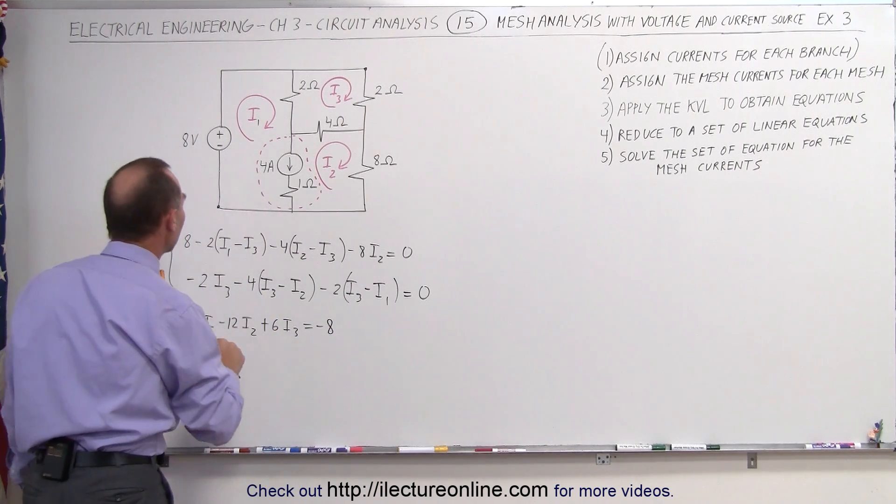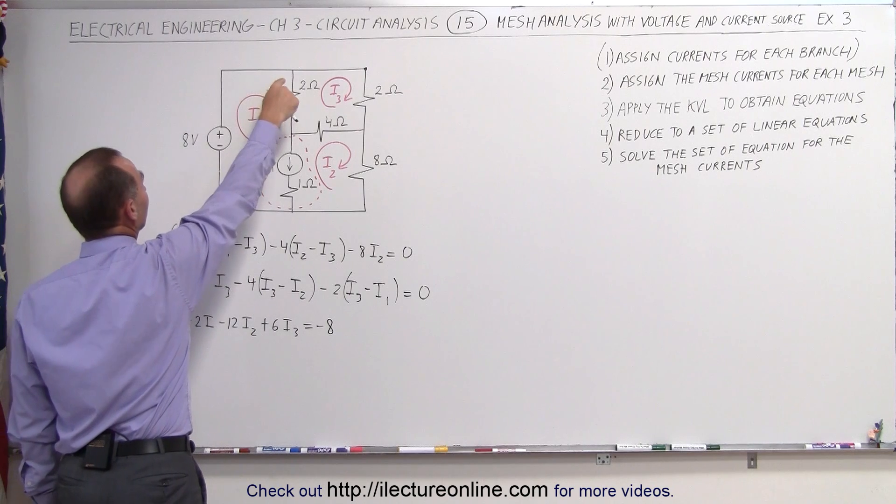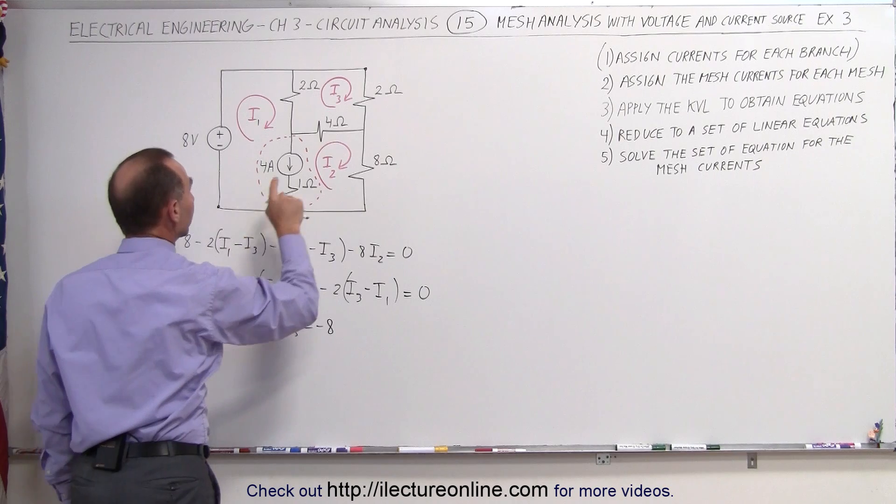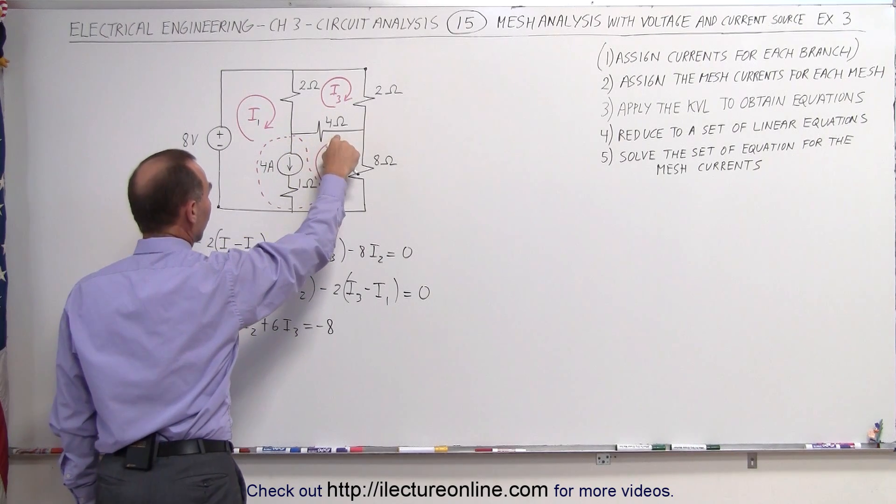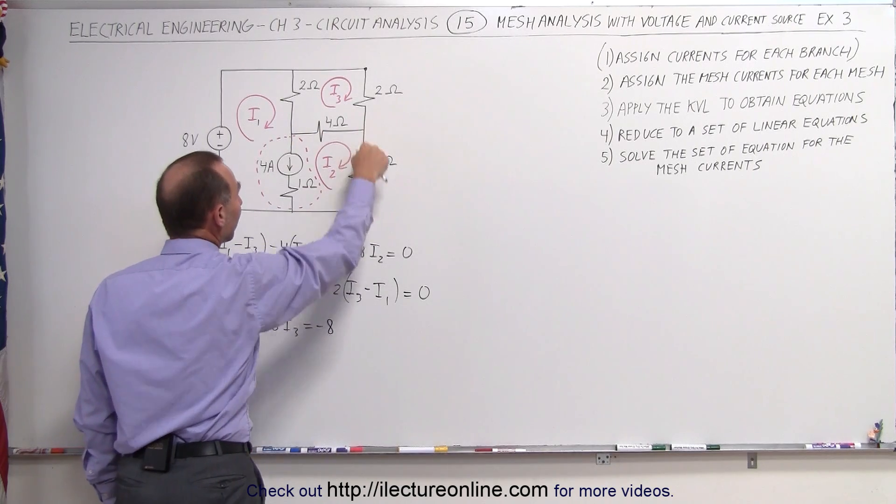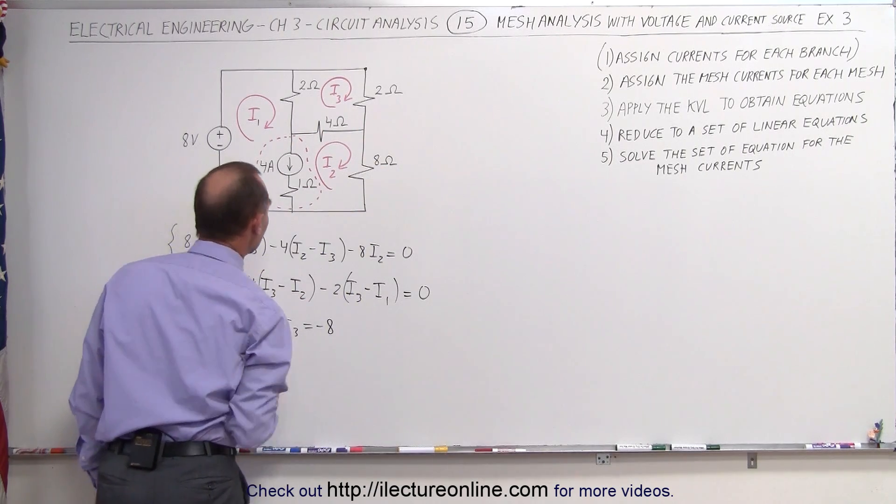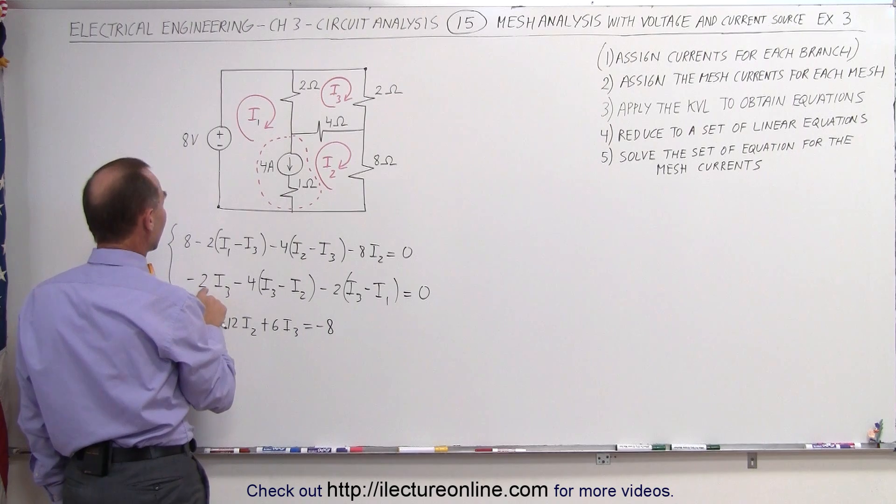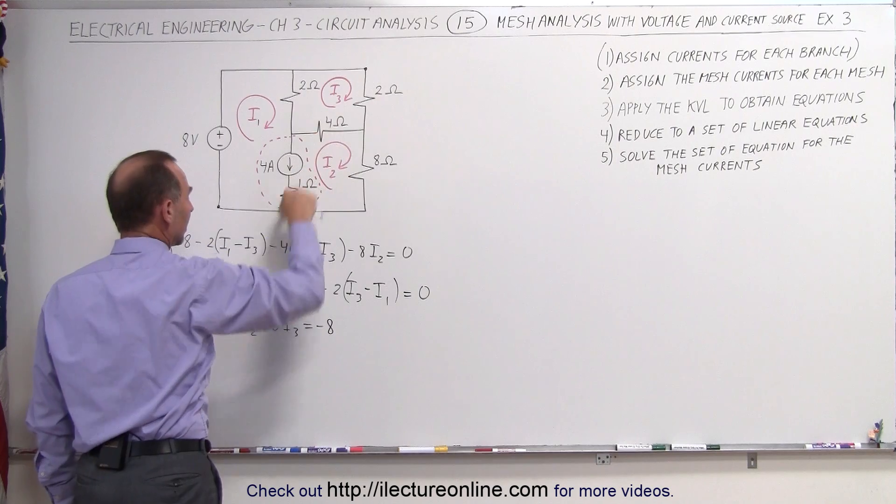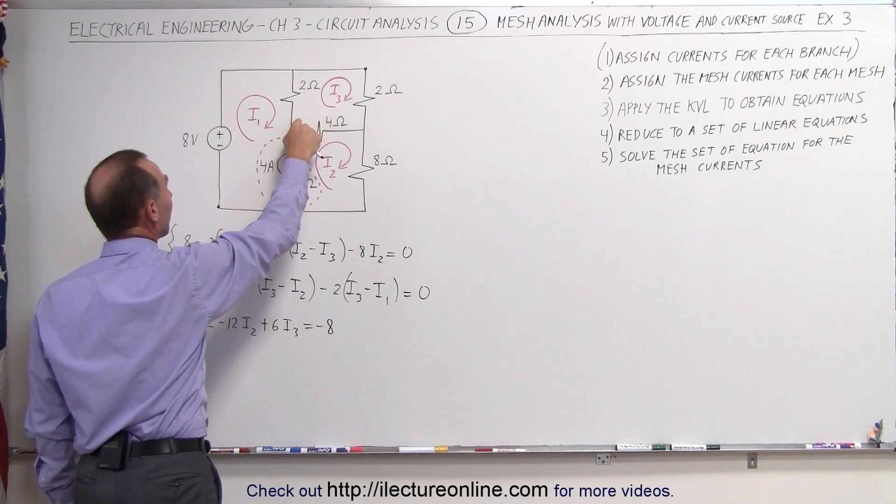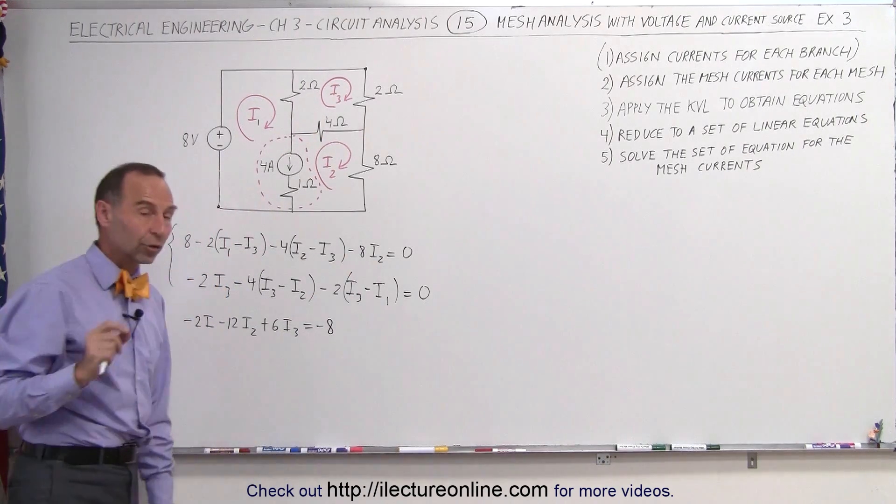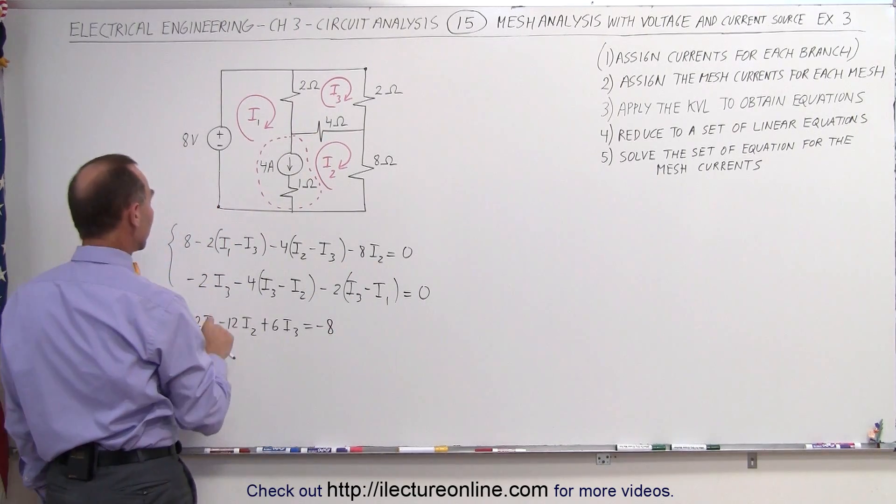Quickly checking the equations to make sure we have this correctly, we have plus 8, minus 2I1, plus 2I3, we have a minus 4I2 and a plus 4I3, and a minus 8I2. And over here we have a minus 2I3, minus 4I3, plus 4I2, and we have a minus 2I3 and a plus 2I1. We're good, those are good equations, so now we simplify the first equation to this.